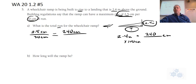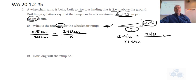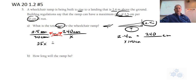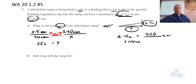So this is similar to section 1.1 where we did proportions. It says: what is the run for this wheelchair ramp? I'm looking for this — I don't know what it is, so it's going to be x. How do we solve for x? Cross multiply and divide. So we have 2.5 times x. I'm going to drop the units now because everybody's in centimeters. So 2.5x equals... what's 240 times 30? You can get on your calculator. 7,200 — yes, 7,200.